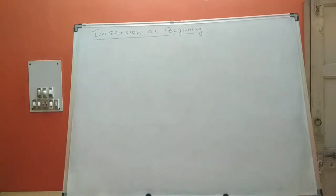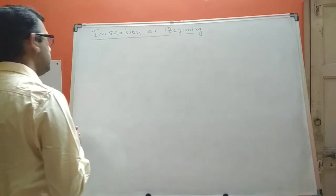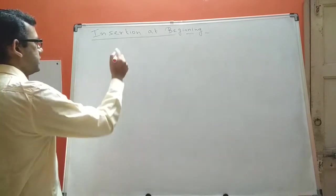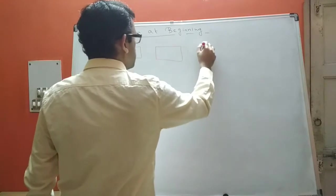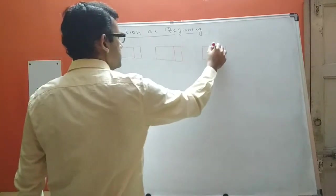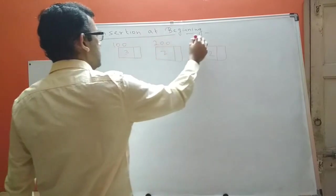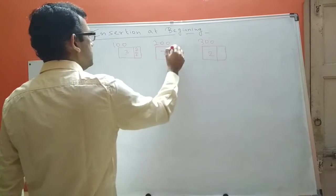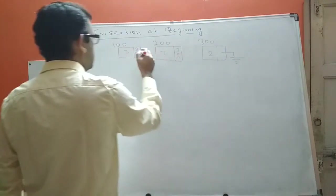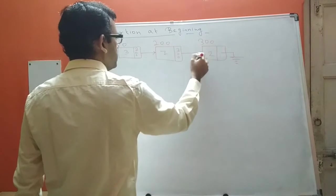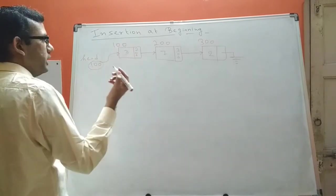In this video we will be discussing insertion at the beginning of a singly linked list. Let's say we have a linked list consisting of three nodes. The data parts are 3, 7, and 2, and the addresses are 100, 200, and 300. The first node contains 200 in its link part, the second contains 300, and the last node's link part contains null. The head pointer contains the address of the starting node.